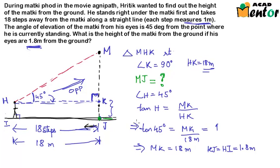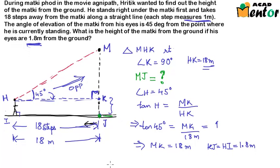So the total height of this matki, that is MJ, is equal to MK plus KJ, that is equal to 18 meters plus 1.8 meters or 19.8 meters. This is the total height of the matki that Hrithik has to reach. So this problem gives us an insight of how we can use trigonometry in our daily lives.